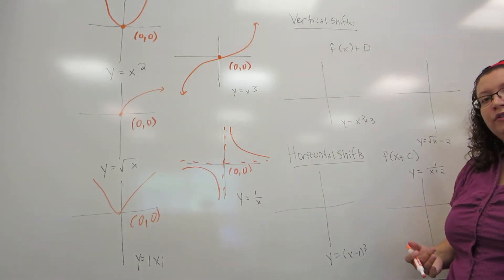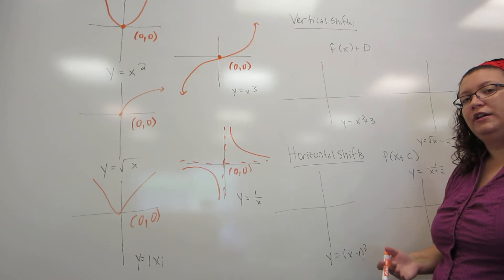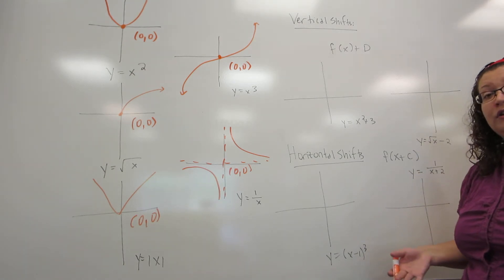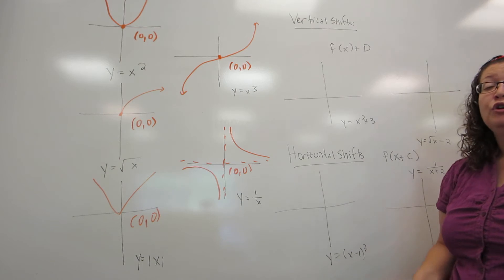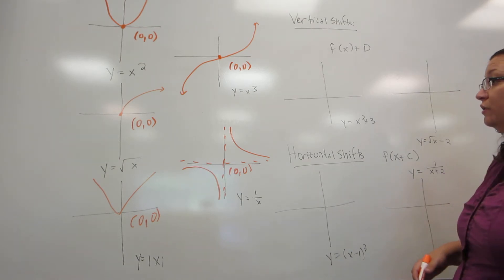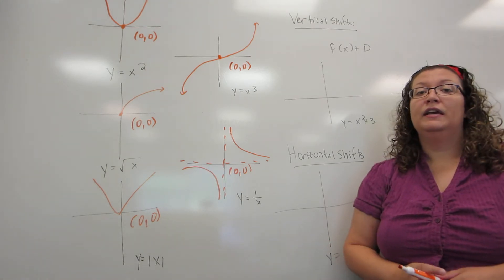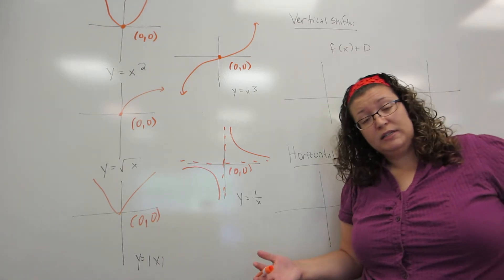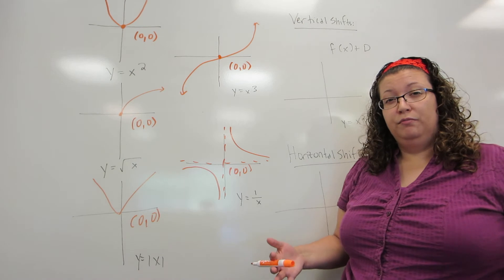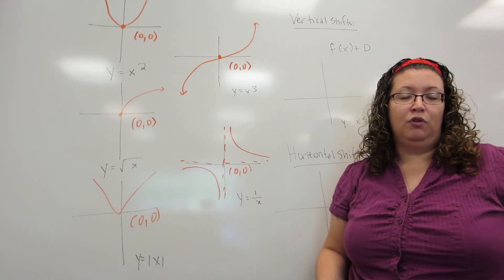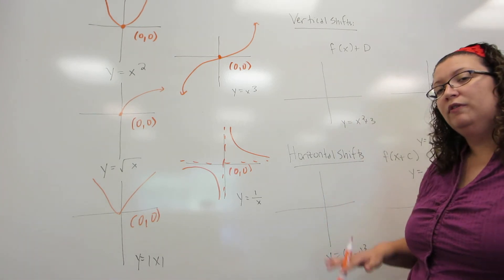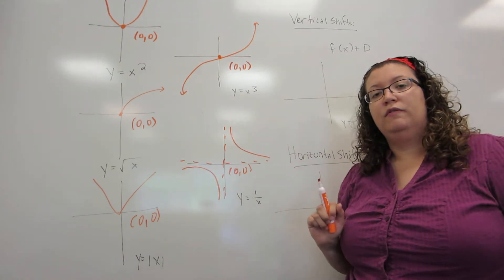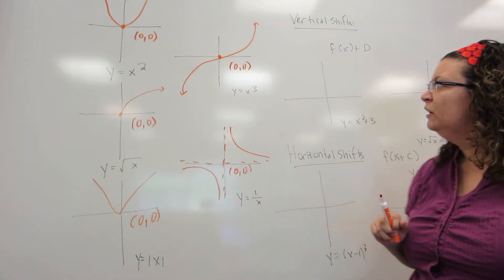Now, what we're going to learn today are what are called graph transformations. If you know the shape of a graph, you can sketch a similar graph with very little work. Notice these are not going to be perfect graphs. And in fact, the thing I'm going to tell you to do is to not label points. Because the more points you label, the more chance there is you label something wrong. So the only point I'm ever going to label on one of these graphs is where that most important point of each graph has moved to.